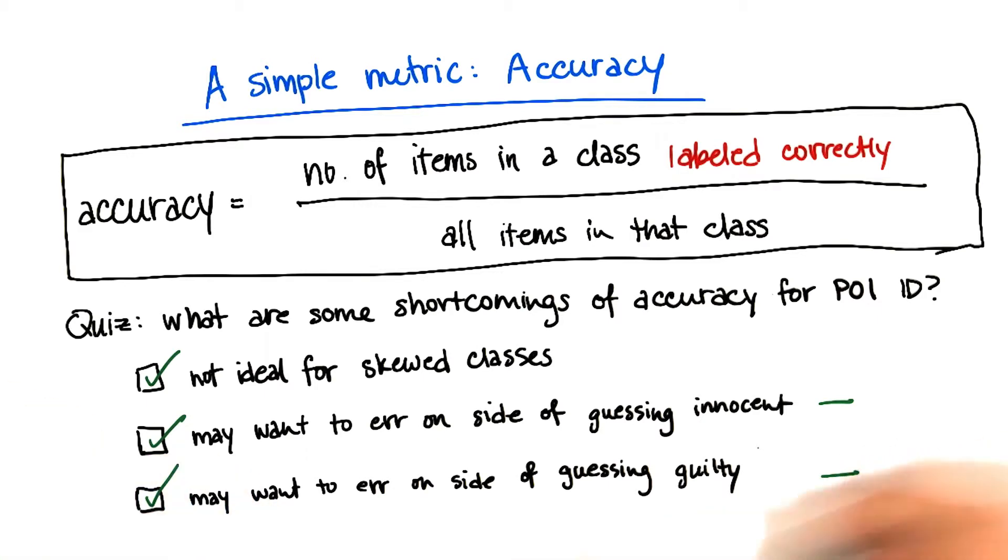Or conversely, you err on the side of flagging them as a person of interest, even if it means you catch more innocent people in your net as a result.